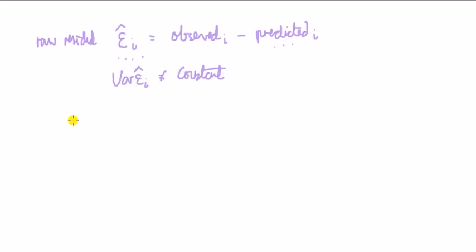That issue of what is large and what is small can be resolved by looking either at the studentized or standardized residual. Both these methods transform the residuals so that you have a new set of residuals which have the same mean and the same or roughly the same variance so that they're more comparable. It does this by converting the residual here into a z-score.